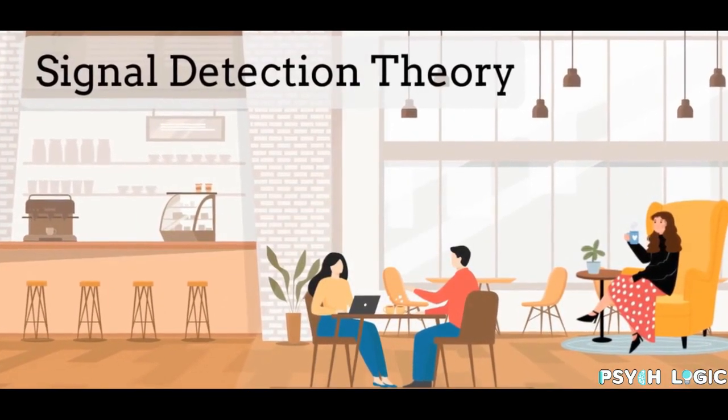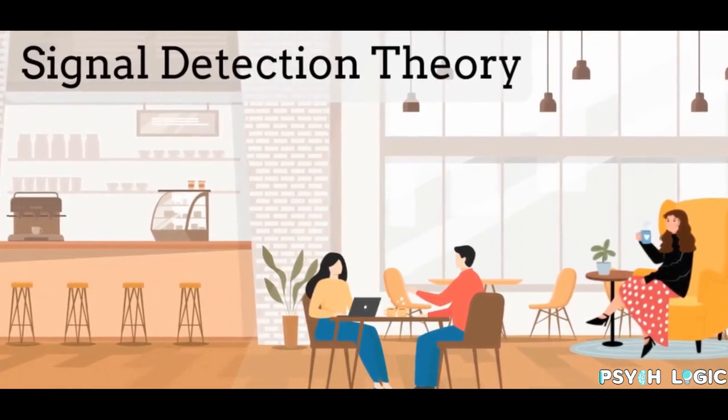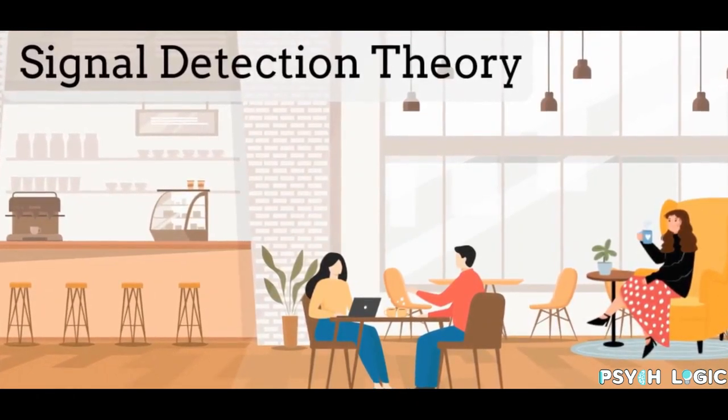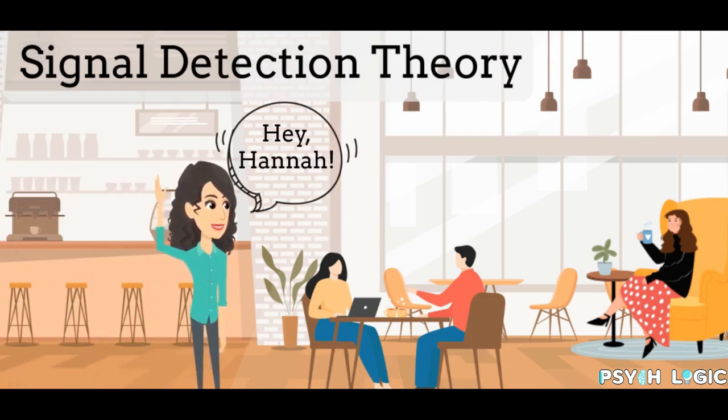Signal Detection Theory. Imagine you're sitting in a crowded coffee shop trying to read a book. There's a lot of background noise—people talking, machines running, music playing. Suddenly, you hear your friend calling your name. How does this happen?